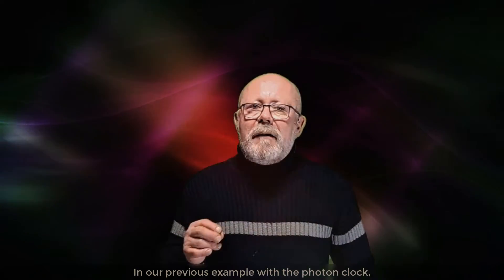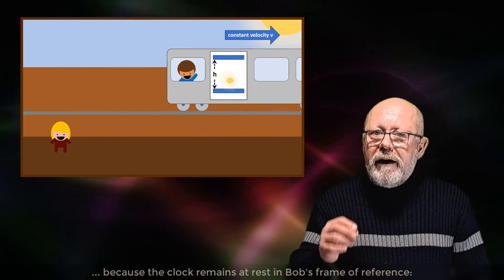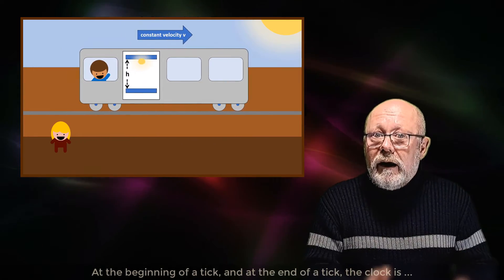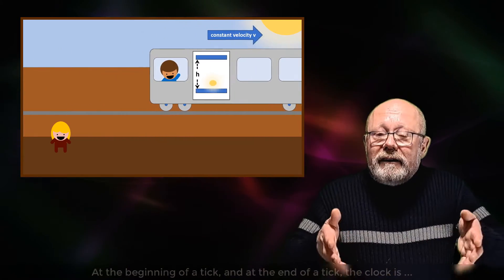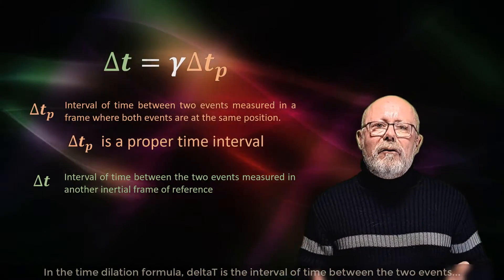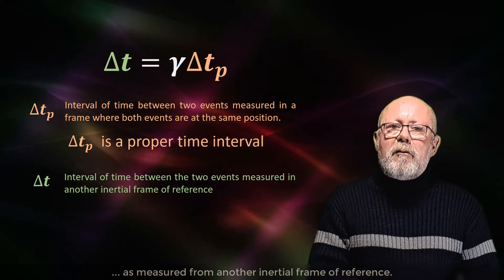In our previous example with the photon clock, it is the duration of a tick measured by Bob which is the proper time interval, because the clock remains at rest in Bob's frame of reference. Yeah, at the beginning of the tick and at the end of the tick, the clock is still at the same position relatively to Bob. In the time dilation formula,